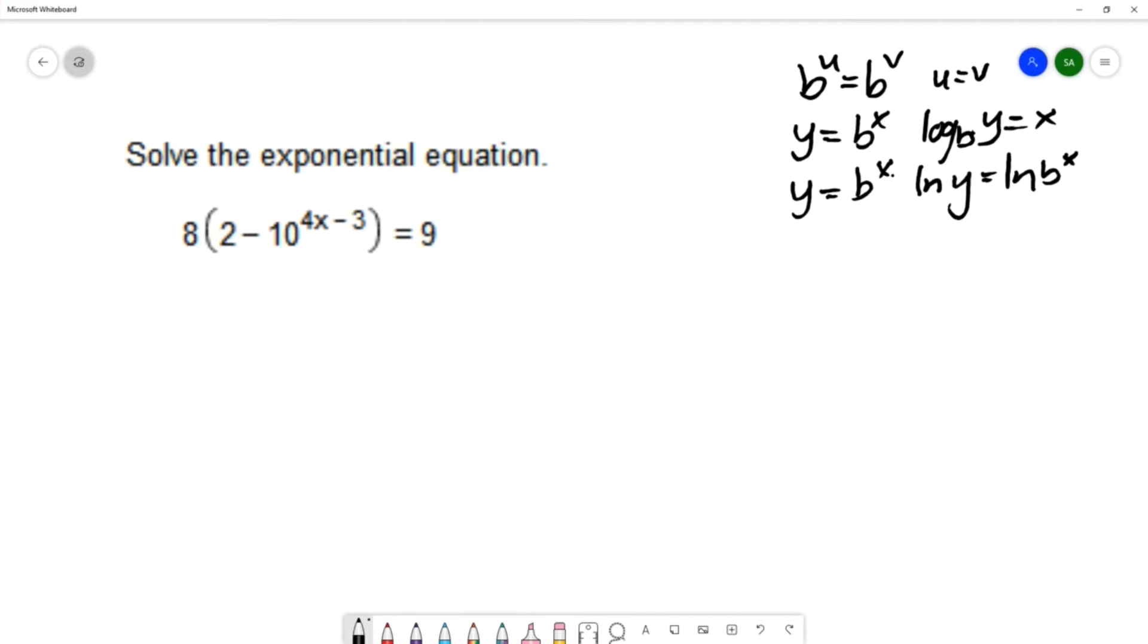The first method requires that the bases be the same. The other two methods you can use almost any time. But all of these strategies for handling exponential equations have the exponential part isolated on one side of the equation. We need the exponential isolated before we use the strategy.